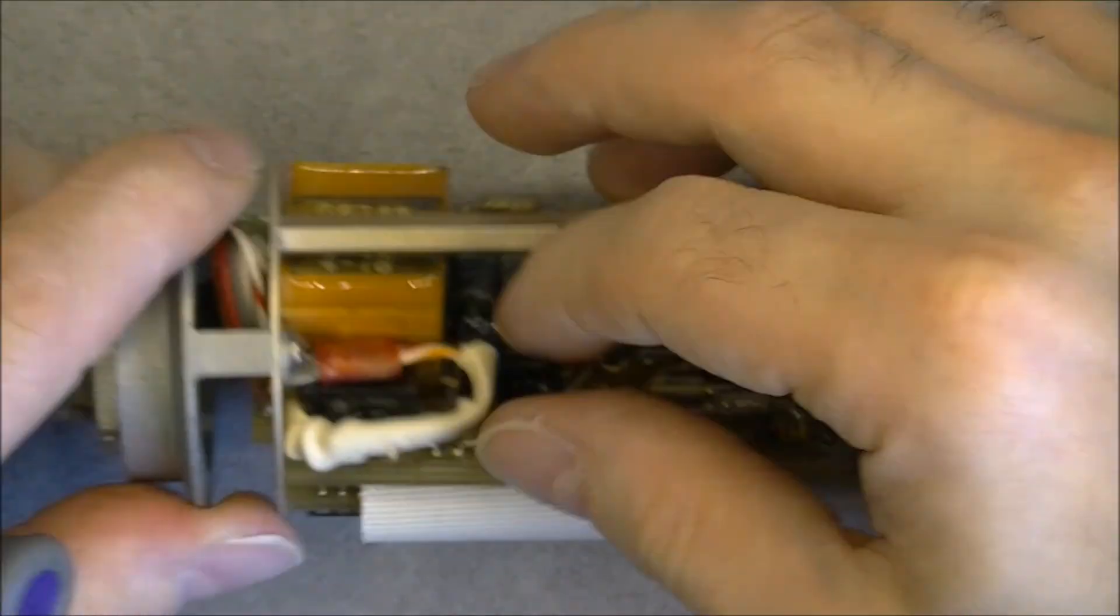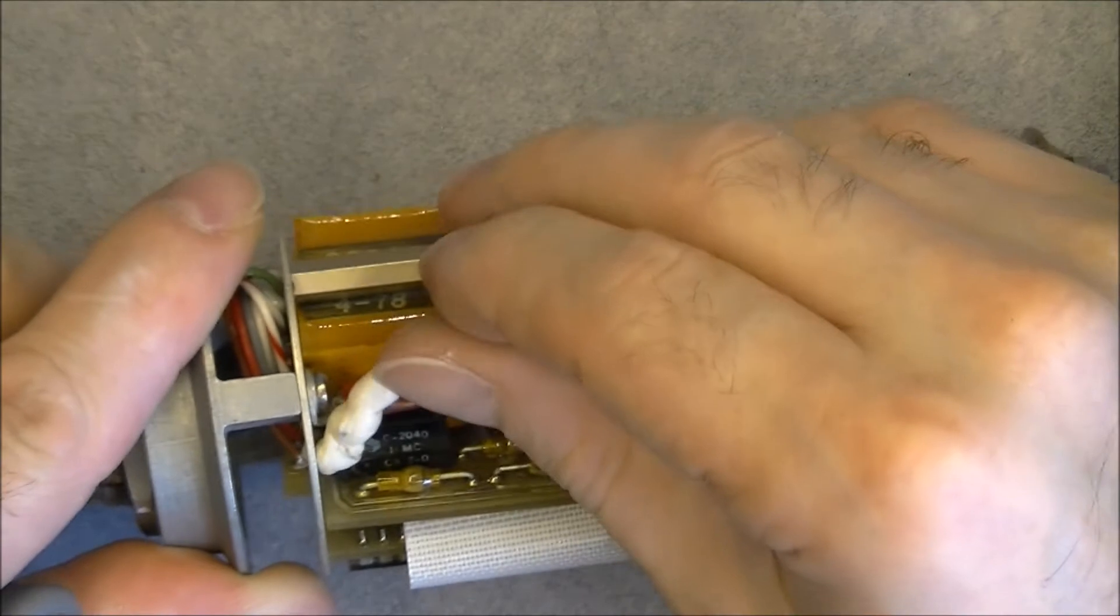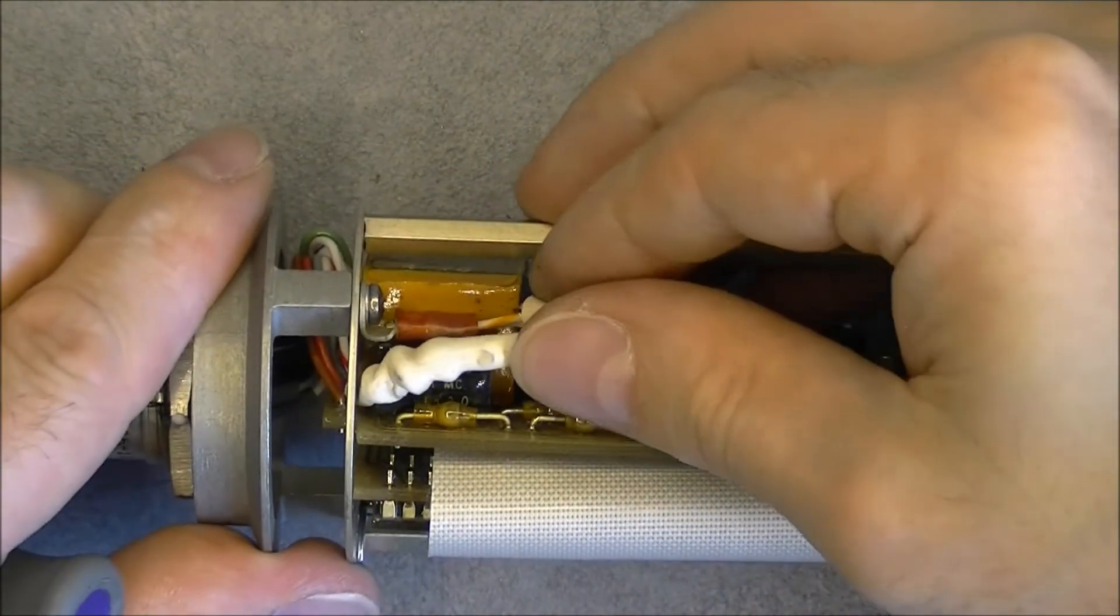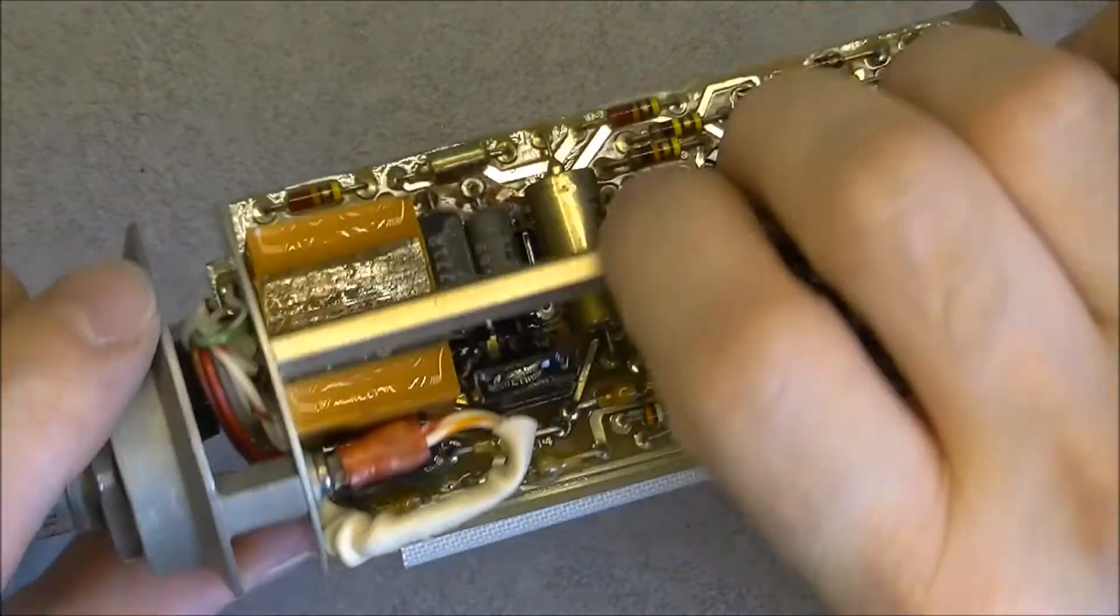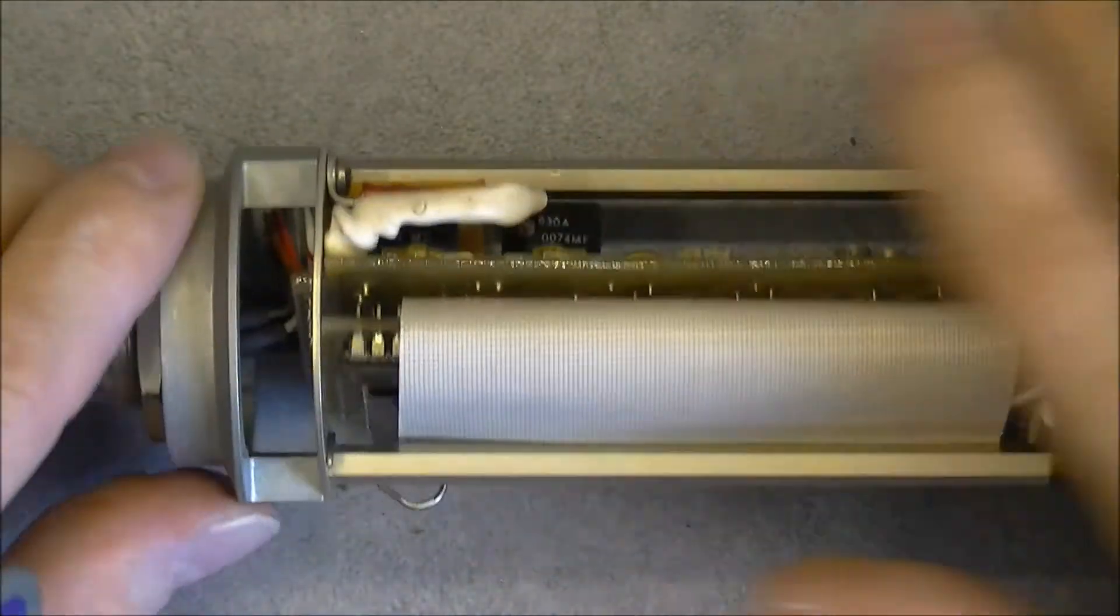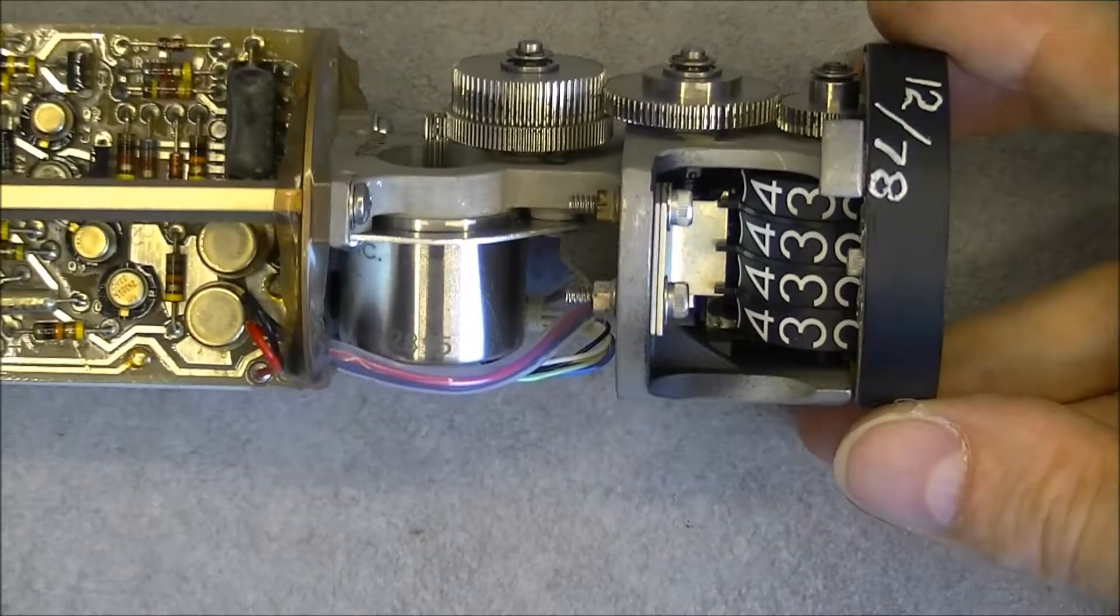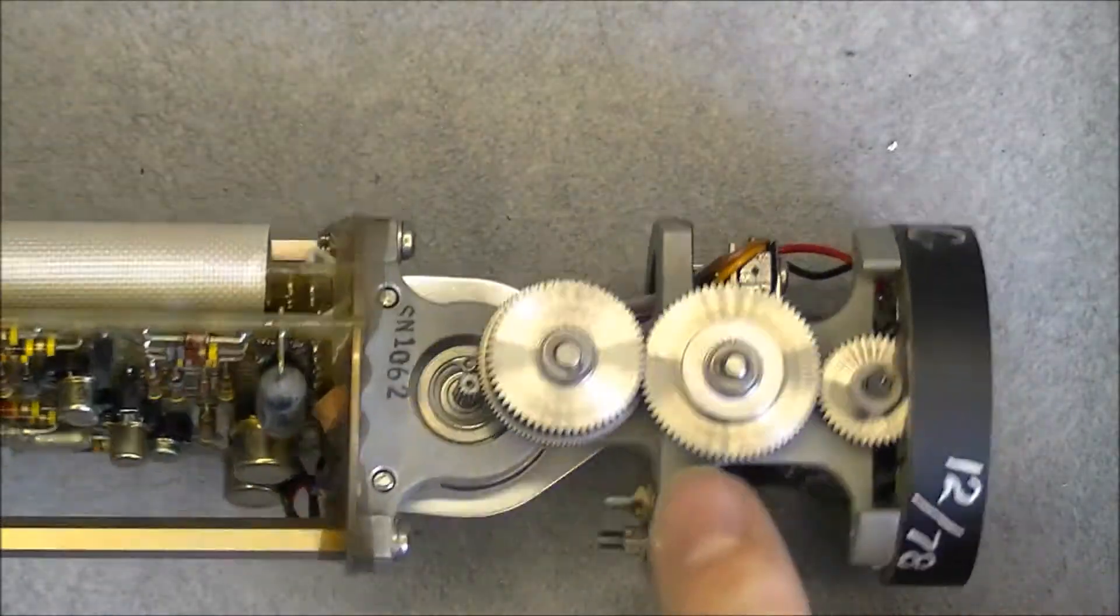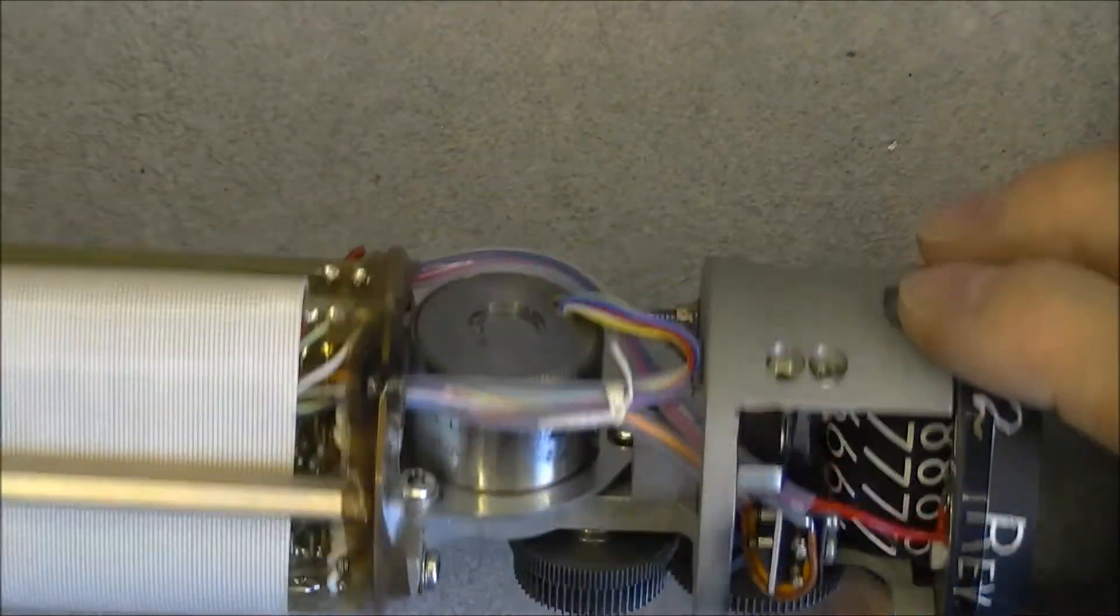And here we have something weird going on with this kind of heat shrink over these wires, in a weird condition naturally. And what else to see? There is a very nice die cast aluminum piece here for the mechanical part of it.